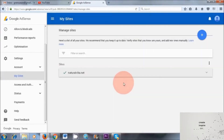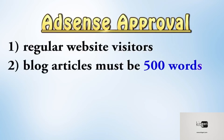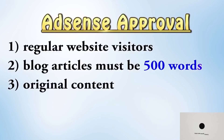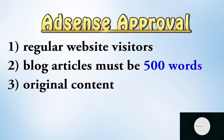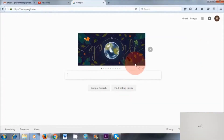Now there are some things you need to be aware of. I recommend only submitting your blog post to Google AdSense for monetization once you have around 20 to 30 people visiting your site on a daily basis. Number two, your blog articles need to be at least 500 words in length — if your blog articles are less than 500 words, you are most likely going to get disapproved from Google AdSense. Also, all of your content needs to be original. If you've copied content and put it on your website, you're most likely going to get disapproved as well. And finally, your content needs to be advertising friendly.